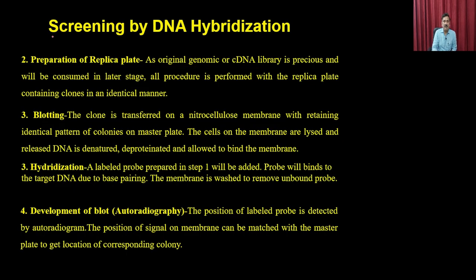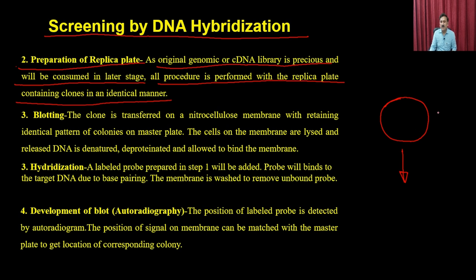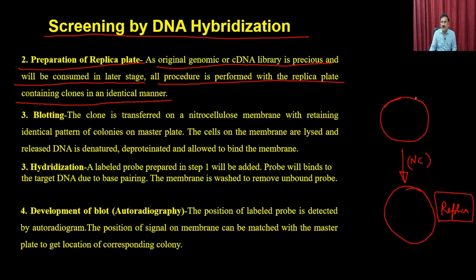For the DNA hybridization screening procedure: you first prepare a master plate containing all clones from your library. Since the original library is precious, all procedures are performed on a replica plate generated by pressing a nitrocellulose (NC) membrane onto the master plate — all clones transfer to the membrane in an identical pattern. The radioactive probe is then applied to the replica plate, binding specifically to clones containing complementary sequences and producing detectable spots.